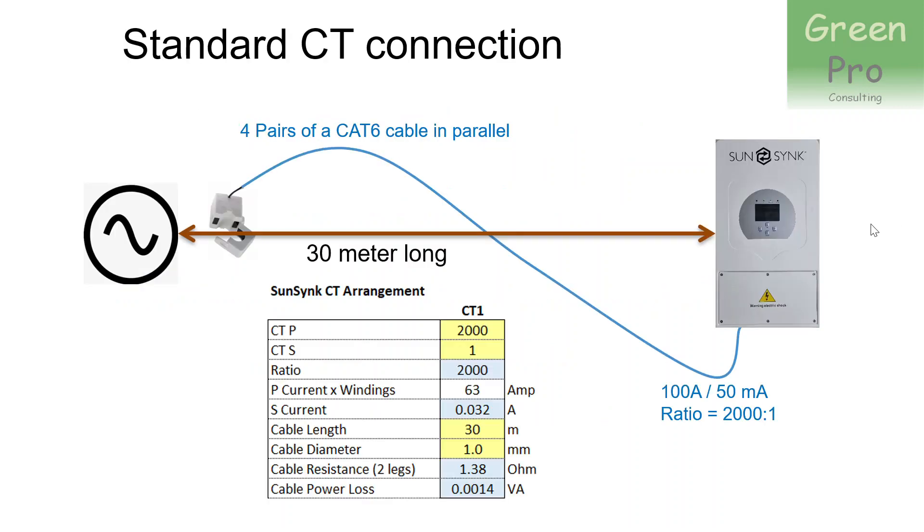So we looked at the problem and essentially the CT is a 2000 to 1 ratio, which means that for 100 amp it would give you 50 milliamp. And essentially in this case, the feed breakers to the house is 63 amp, which means that you can get a maximum secondary current on the CT of 0.032 or 32 milliamps.